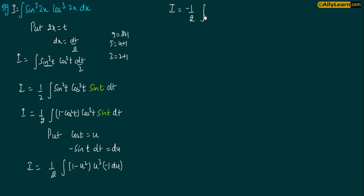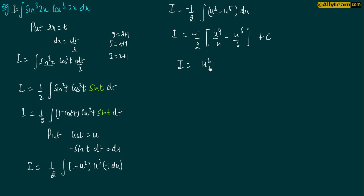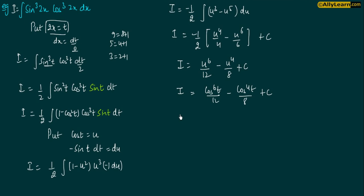So I = -1/2 · [u⁴/4 - u⁶/6] + c, which gives u⁶/12 - u⁴/8 + c. Now u = cos t, so this is cos⁶t / 12 - cos⁴t / 8 + c. And t = 2x, so I = cos⁶(2x) / 12 - cos⁴(2x) / 8 + c. This will be my required result.